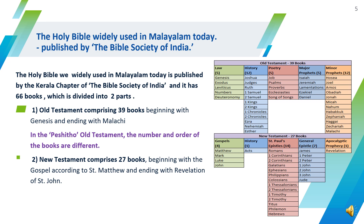The New Testament has 27 books, beginning with the Gospel according to St. Matthew and ending with Revelation. The New Testament can be categorized as Gospels, Acts of Apostles, St. Paul's Epistles, General Epistles, and Revelation.